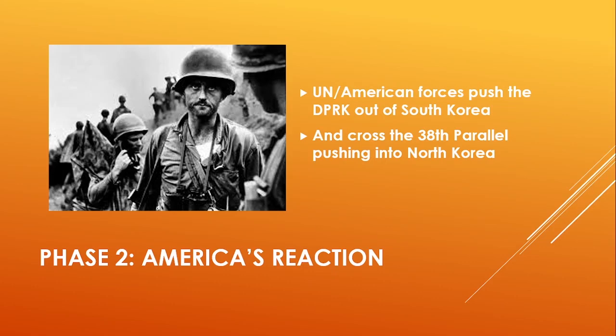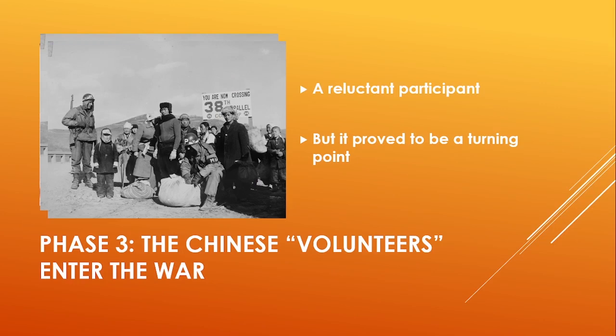Consequently, the PRC warned that if the advance northwards was not halted, the PRC would have to respond. Despite this, the UN forces got to within 100km of the Yalu River and the PRC's border. And the size of the Chinese Volunteers Force — I'll explain the Volunteers in my Characteristics presentation as well — and their resolute determination, was such that it proved another turning point in the war. In this third phase, the UN-American troops were swept back, and it was the turn of the Chinese troops to cross the 38th parallel.